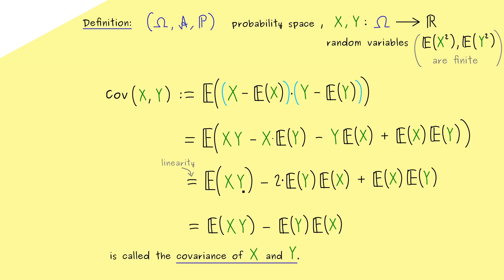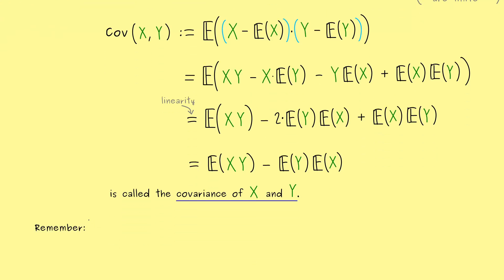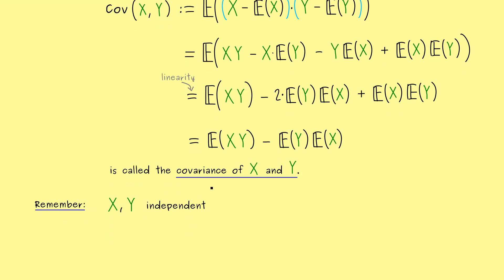And moreover, this definition shows you, that the covariance measures how close the two variables X and Y are to independence. This makes sense, because we already know what independence means for the expectations. In fact, if we assume that X and Y are independent, we know that this expectation is just the product of the two expectations. In other words, the covariance is zero in this case.